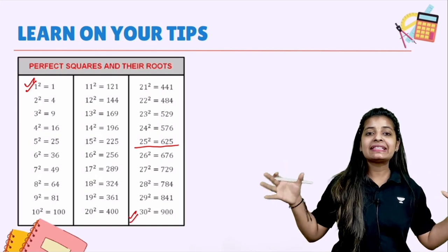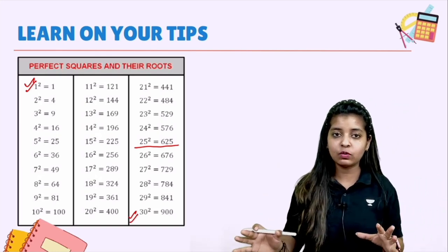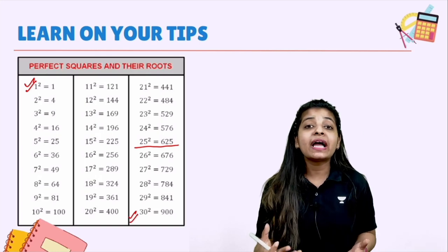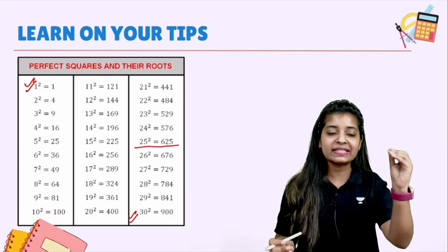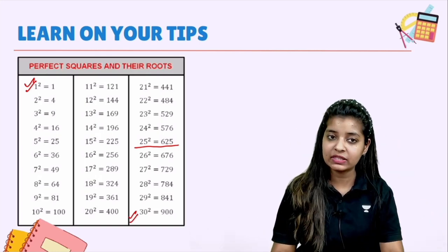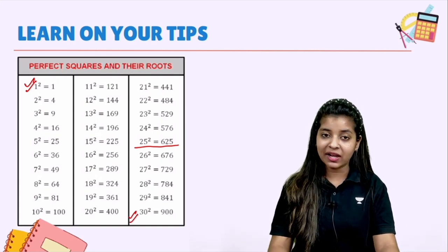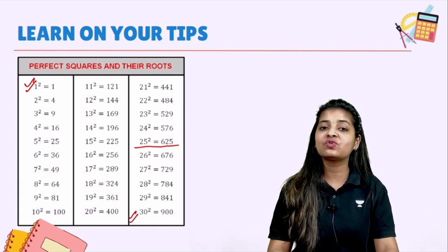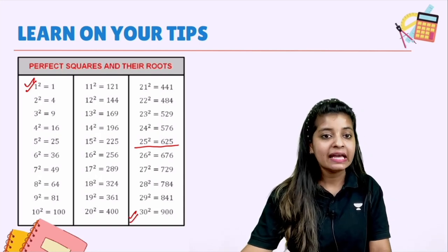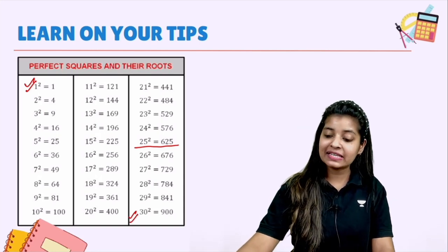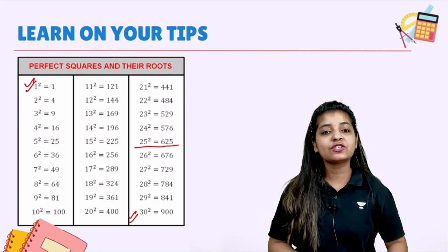So there are so many squares! But you already have squares up to 20 learned — I am super sure about it. What you have to do now is quickly learn the squares from 21 to 25. Twenty-one squared is 441, twenty-two squared is 484, twenty-three squared is 529, twenty-four squared is 576, and twenty-five squared is 625.